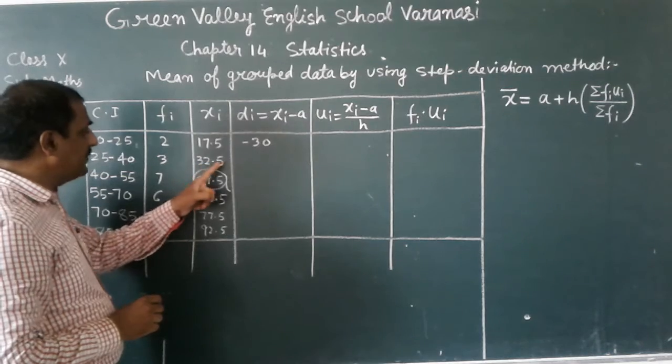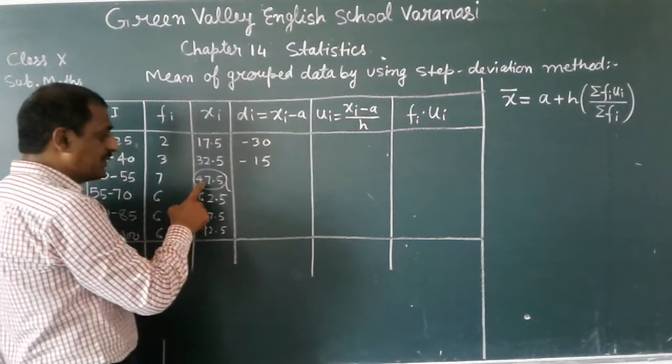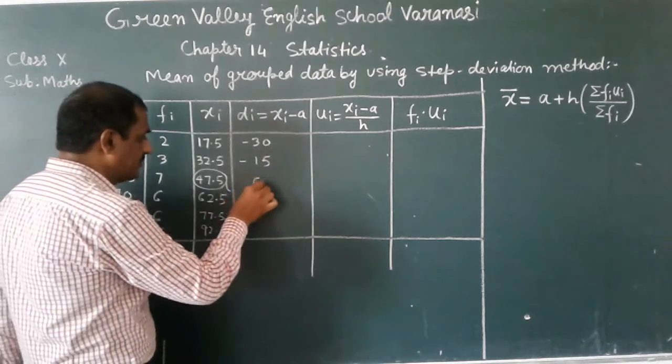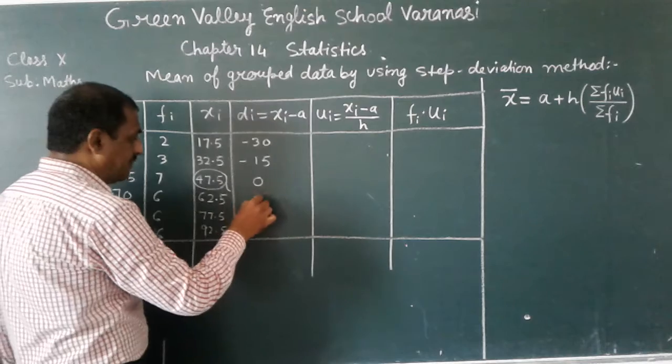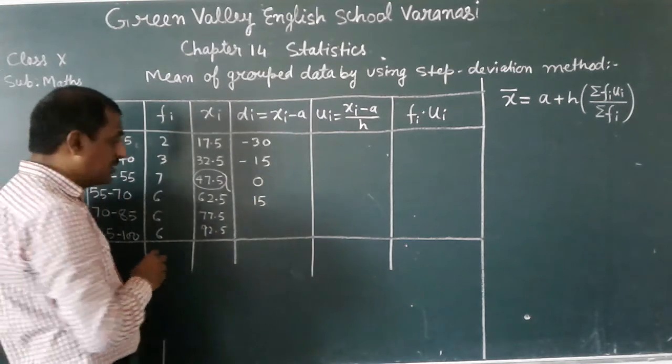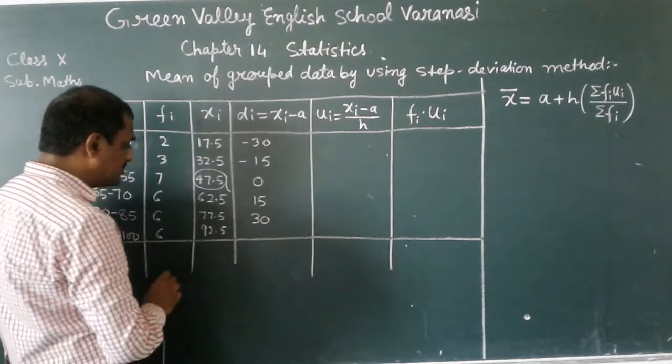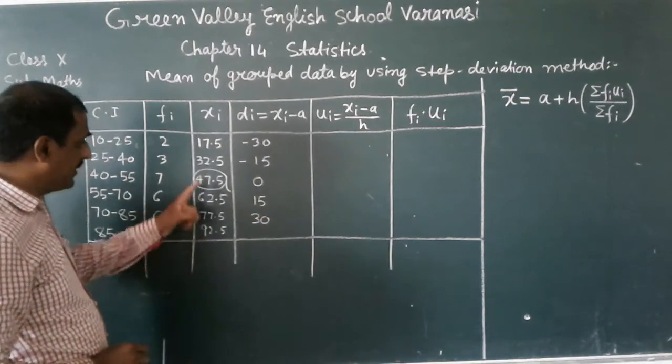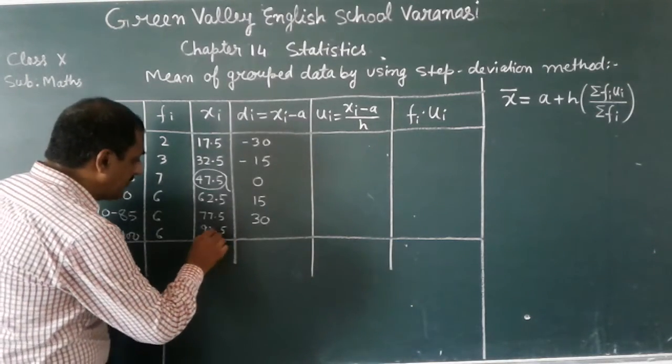Next one, 32.5 minus 47.5 is minus 15. In the next, 47.5 minus 47.5 is 0. 62.5 minus 47.5 is 15. 77.5 minus 47.5 it will become 30. Now in the last one, 92.5 minus 47.5, it will become 45.